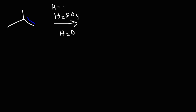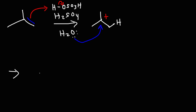We can rewrite sulfuric acid H2SO4 as H-O-SO3H. In the first step, the alkene is going to behave as a nucleophile and abstract a proton. That proton will go on the primary carbon that was double bonded, producing a more stable tertiary carbocation intermediate. Then in the next step, water is going to combine with the carbocation intermediate, giving us an oxonium species.